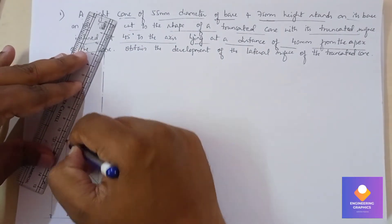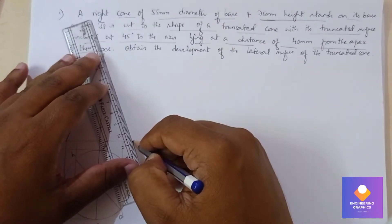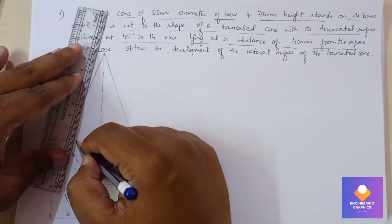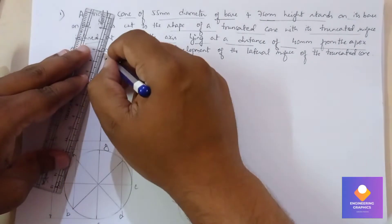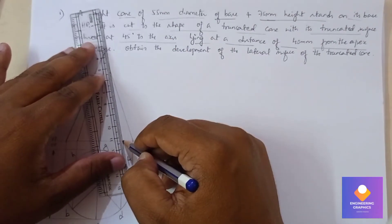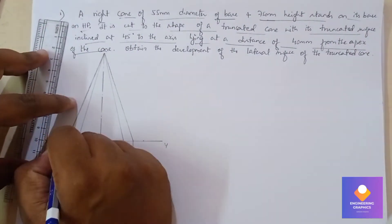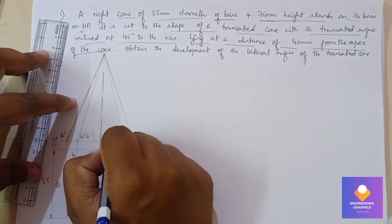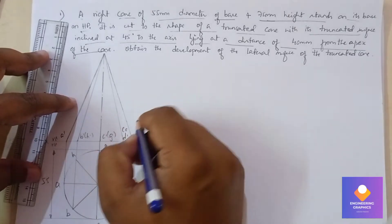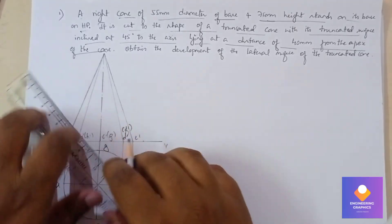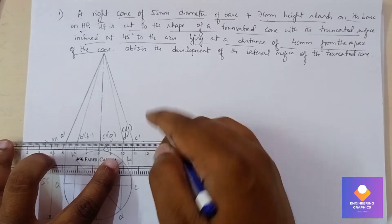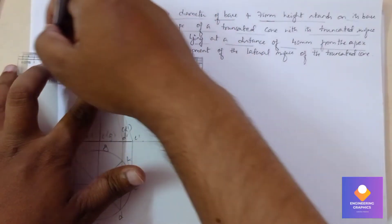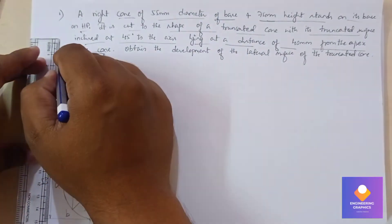The front view of the cone is a triangle. The inside lines are shown with thin lines — these are the generators. Mention the names. From the front view, the visible faces are written without brackets; things not visible are written within brackets. Mention the axis — it is 75 mm.